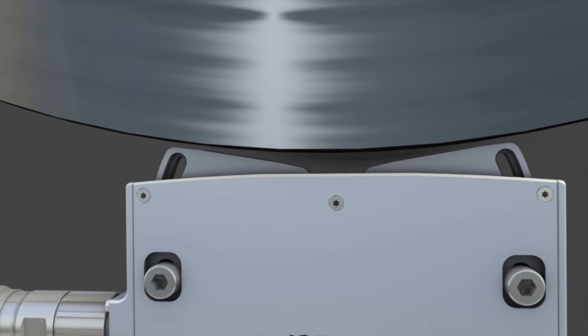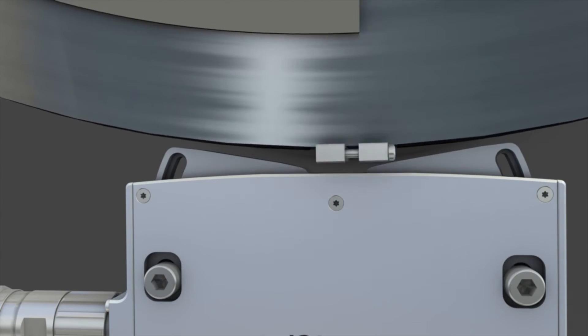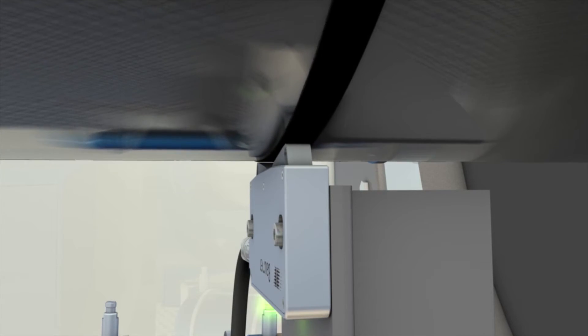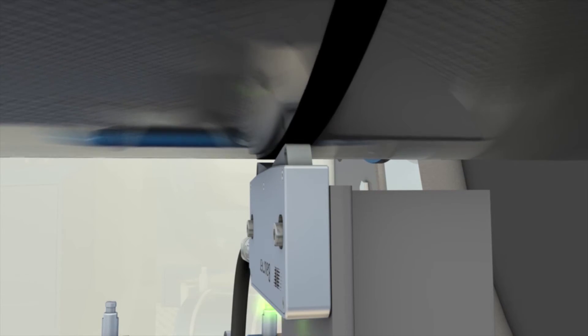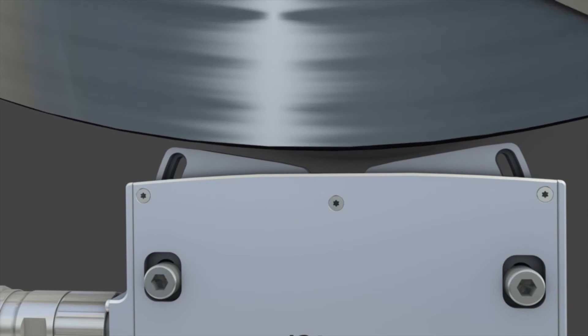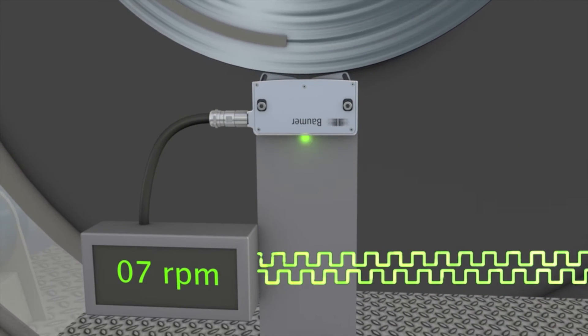Dual magnetic sensing of the encoder ensures consistent signal quality. The gap in the turnbuckle is automatically compensated. The encoder allows for radial backlash between 1 and 3 mm and axial displacement of plus or minus 5 mm.